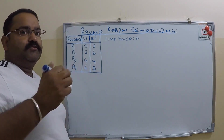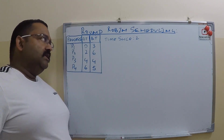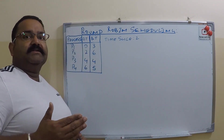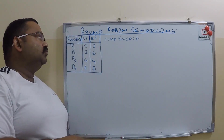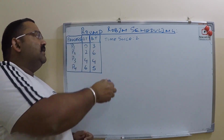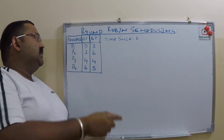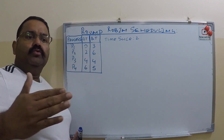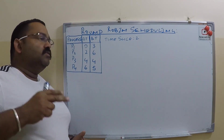For example, these are four processes with their arrival times and burst times. What the CPU does is divide its time into time slices, and each process gets its time slice. The time slice in this case is two seconds. So process P1 comes first and is processed for two seconds, then P2 for two seconds, and so on — repeating until all processes finish their processing.